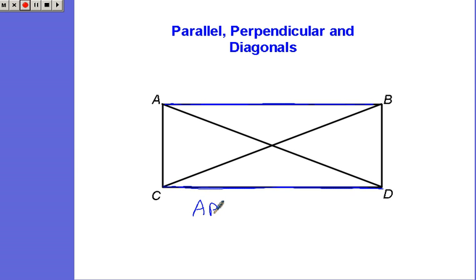And we can say that AB, you need a segment symbol over the top, is parallel to segment CD. These two lines would never cross, so they're parallel to each other. Let's take a look at some more examples.